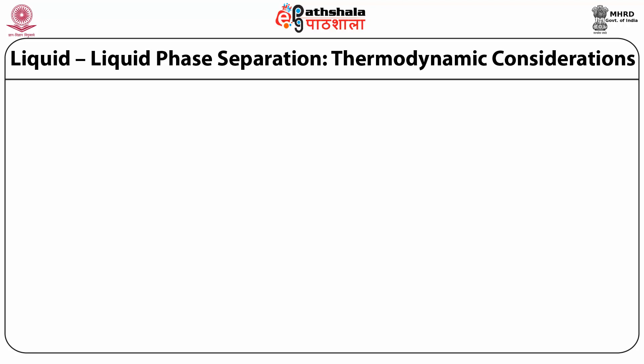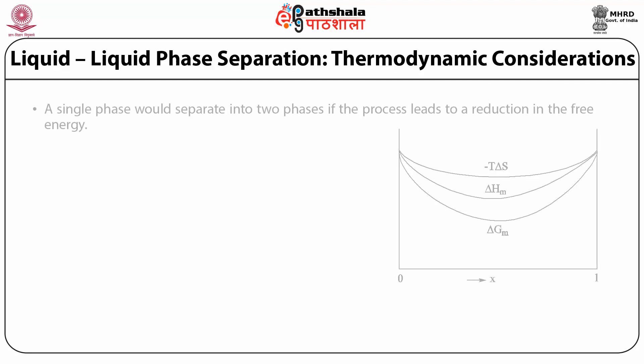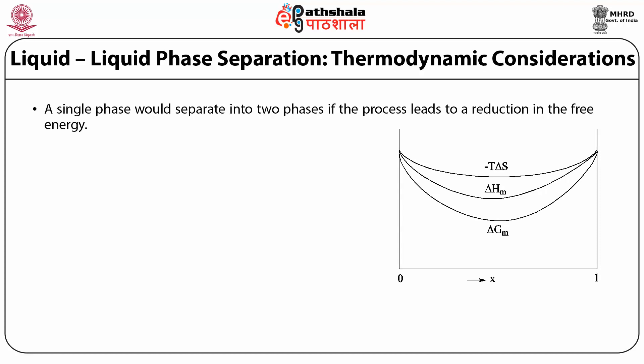The sub-liquidus immiscibility is found in silicate melts containing Na2O (sodium oxide), Li2O (lithium oxide) and BaO (barium oxide). These systems have an S-shaped liquidus. A single phase would separate into two phases if the process leads to a reduction in the free energy. The free energy of mixing of two phases can be written as ΔGm = ΔHm − TΔSm, where G is the Gibbs free energy, H is the enthalpy and S is the entropy.